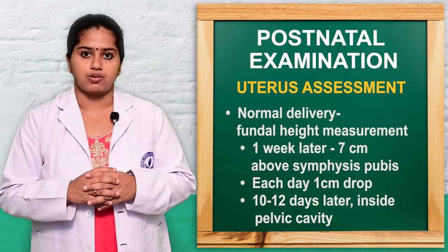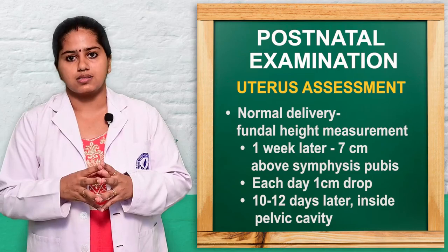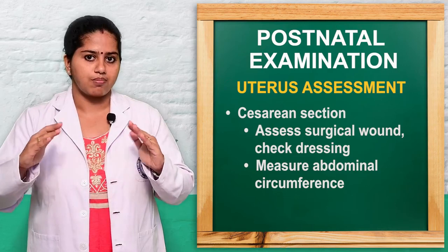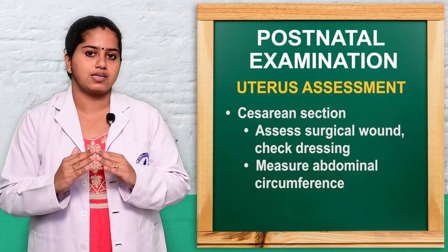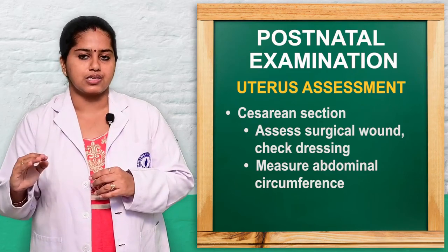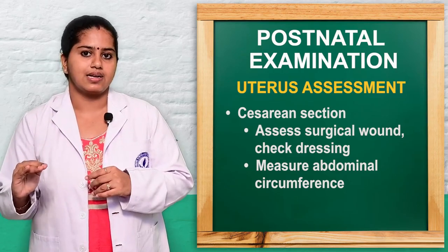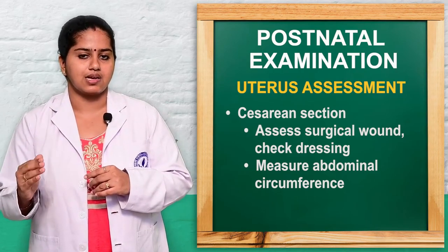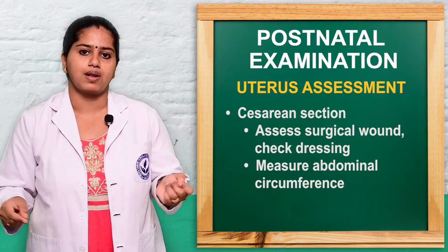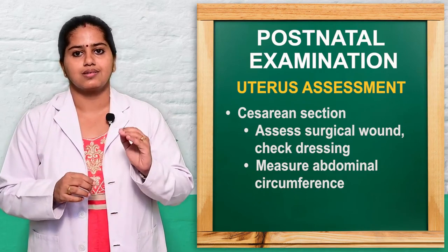Sub-involution, blood clots, bleeding, and PPH can all be assessed from the uterus. Any tenderness should be noted. For caesarean mothers, we assess the caesarean scar — examining the incision for cleanliness, redness, ecchymosis, discharge, wound approximation, and dressing. Abdominal circumference can also be measured as part of the uterus assessment.